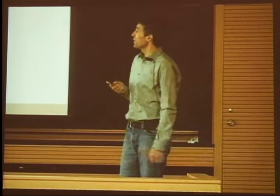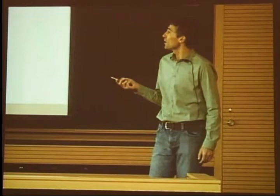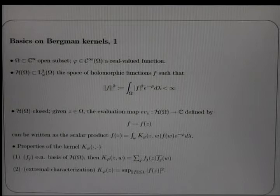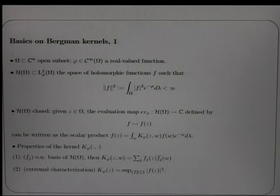Bergman kernels are almost impossible to compute explicitly unless the domain omega has a great deal of symmetry. Also importantly, their definition does not distinguish between n equal to one and n greater than one — it is the same. Usually, things change radically when we move from n=1 to higher dimensions. Let's complicate the picture a bit and consider the following.